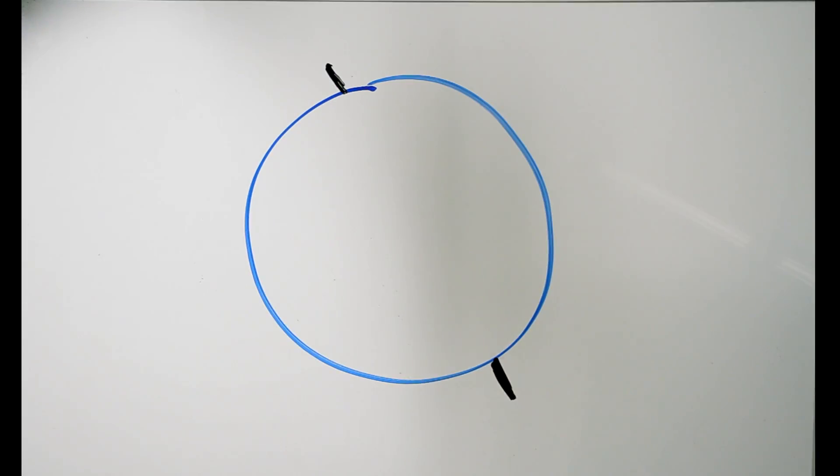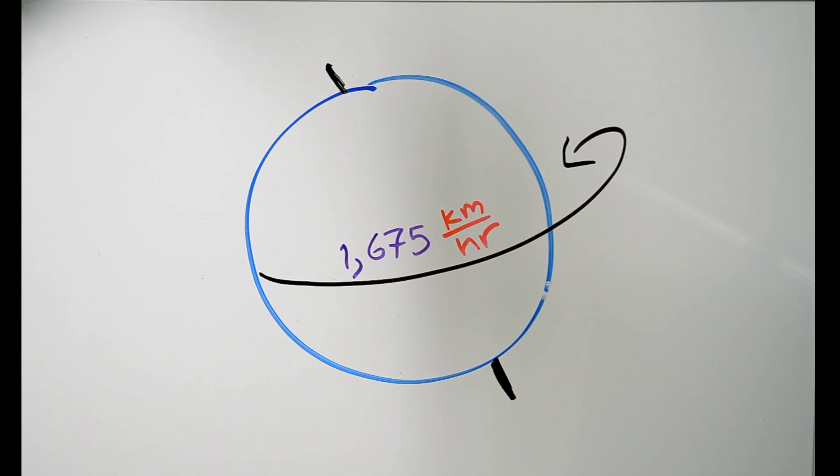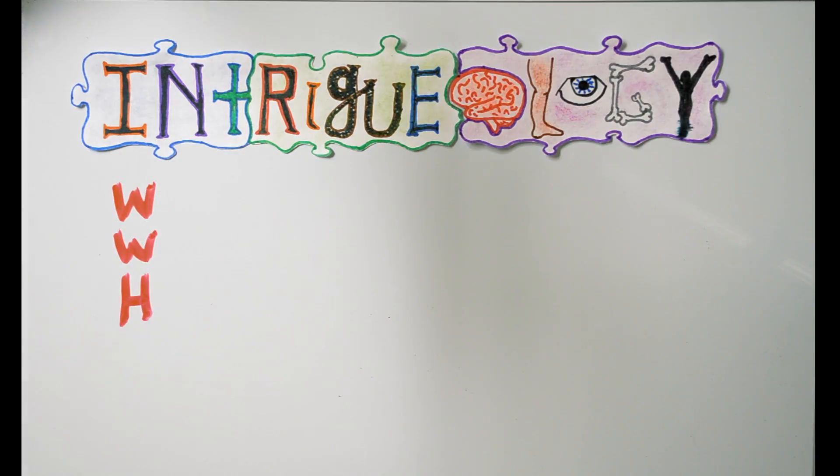The Earth spins about its axis at about 1,675 kilometers per hour. What would happen if it stopped spinning? This is Intrigology.